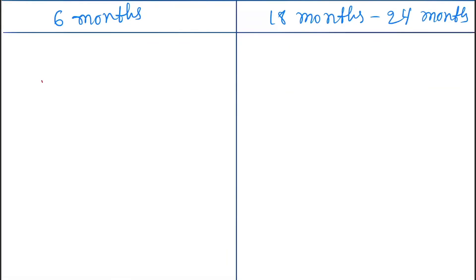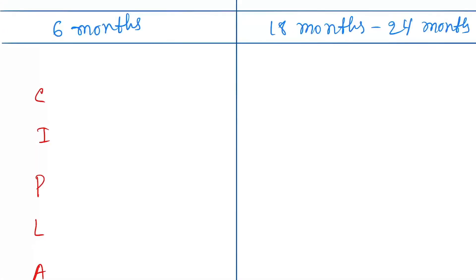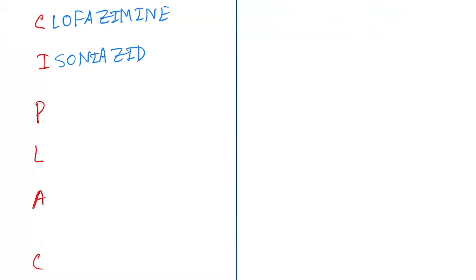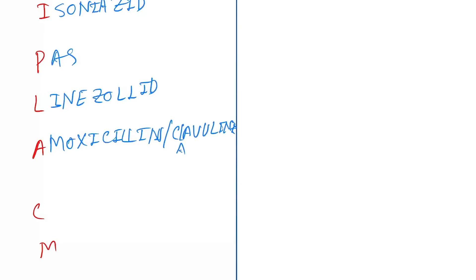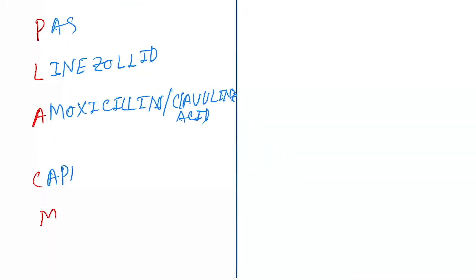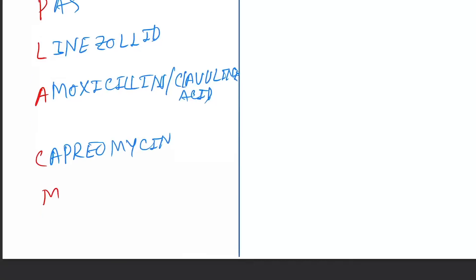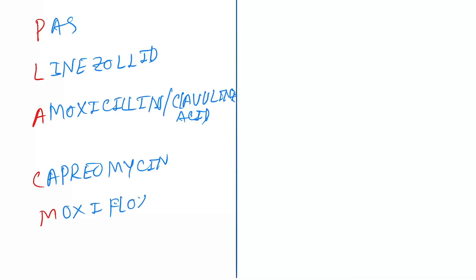For the initial phase of XDR-TB, remember the mnemonic CIPULA CM: C for clofazimine, I for isoniazid, P for PAS, U/L for linezolid, A for amoxicillin-clavulanic acid, C for capreomycin, and M for moxifloxacin.